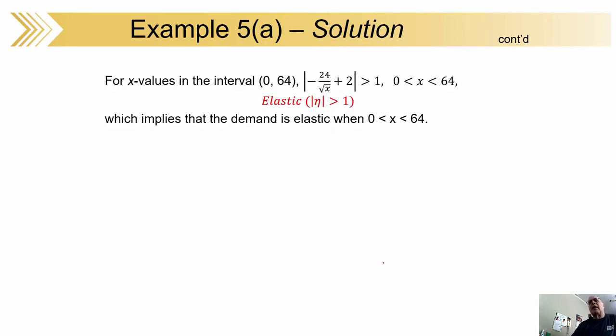Next, elastic. How about elastic? That's when the absolute value of eta is greater than one. And you can do the work, and what you get is x is between 0 and 64. That's when the demand is elastic. That means when you decrease the price, demand goes up and vice versa.